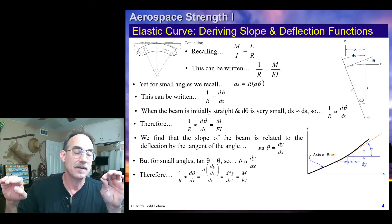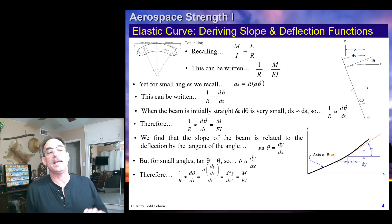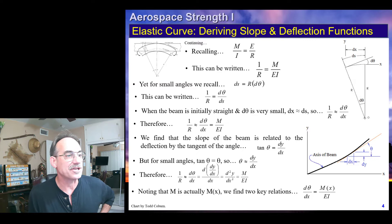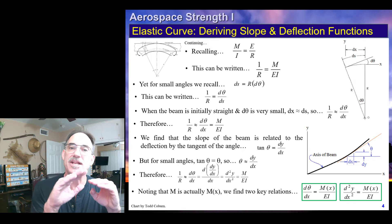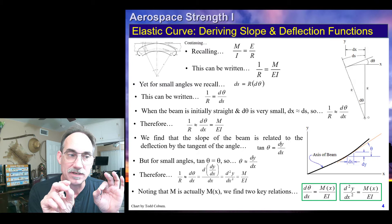Don't get distracted — this is really important. The second derivative of the deflection is equal to the moment over EI. What this means is if we have an equation for the deflection of the beam and we differentiate it twice, we will get the equation for the moment of the beam with respect to x over EI. This is very powerful, and we can use calculus to solve this in either direction. Since M is M of x, we can write two key relations: the change in slope with respect to x equals M(x) over EI, and the second derivative of the deflection equals M over EI.